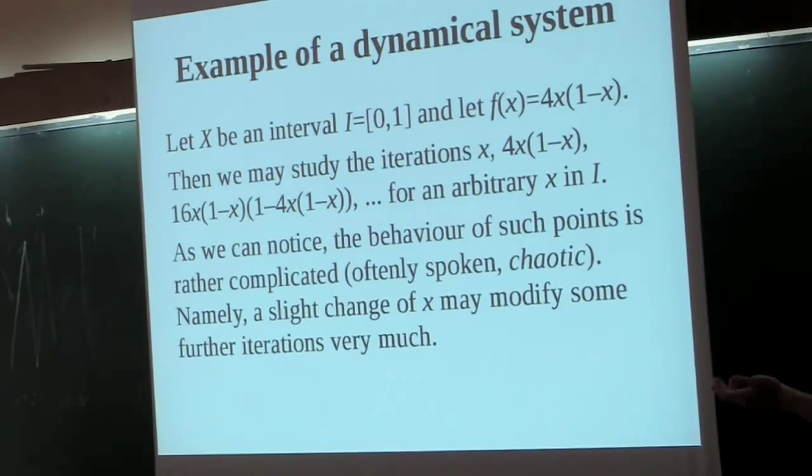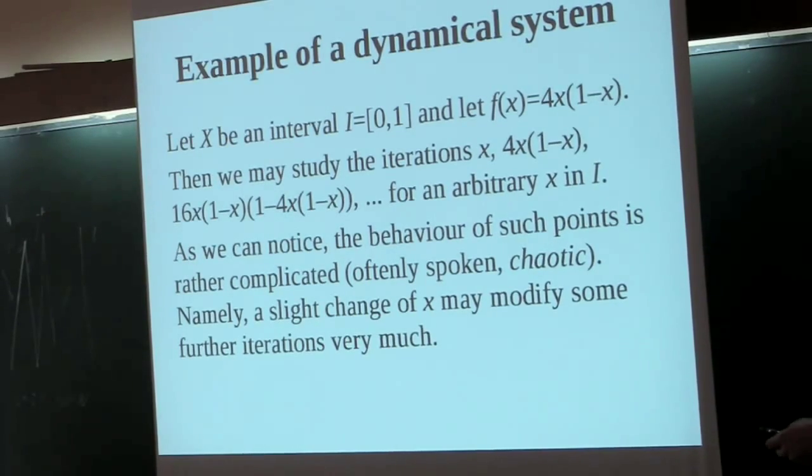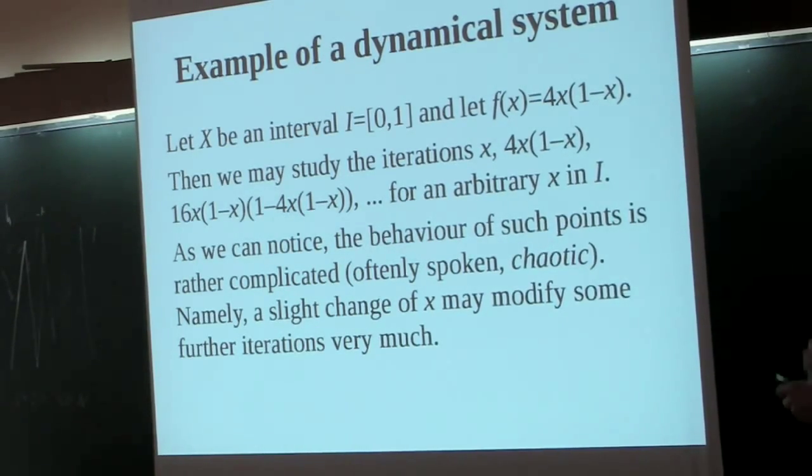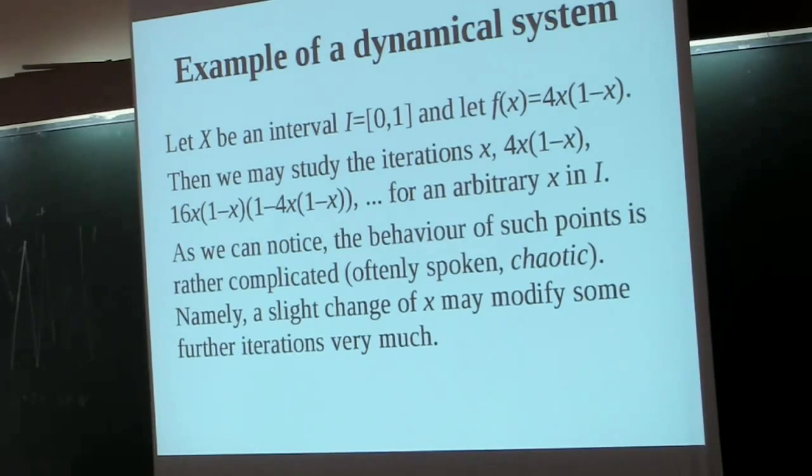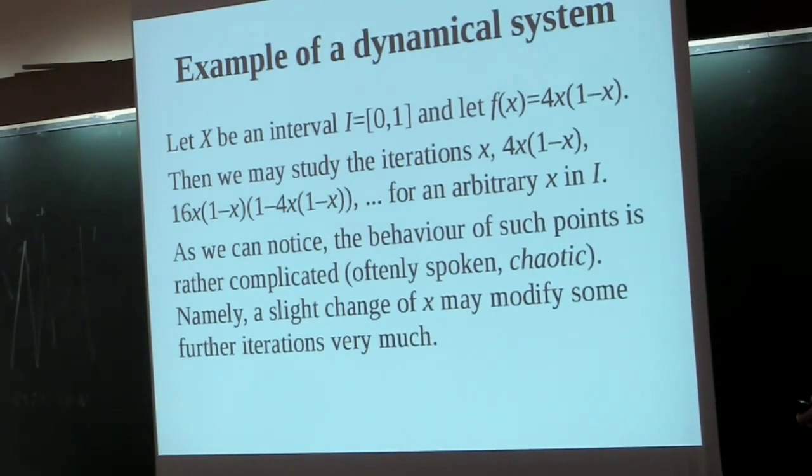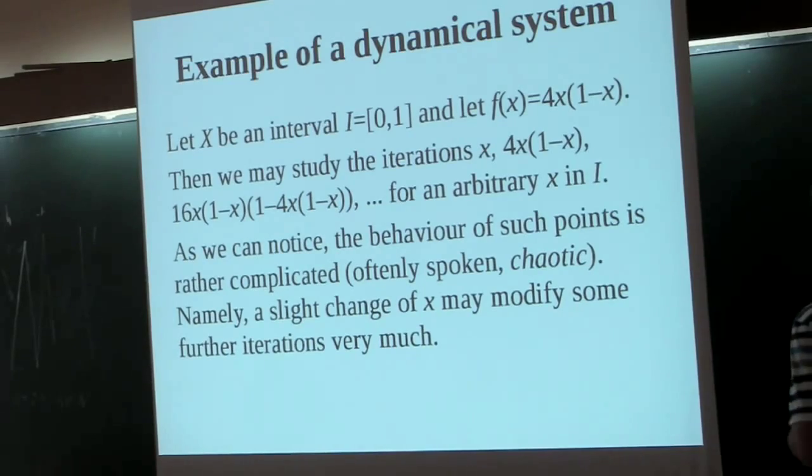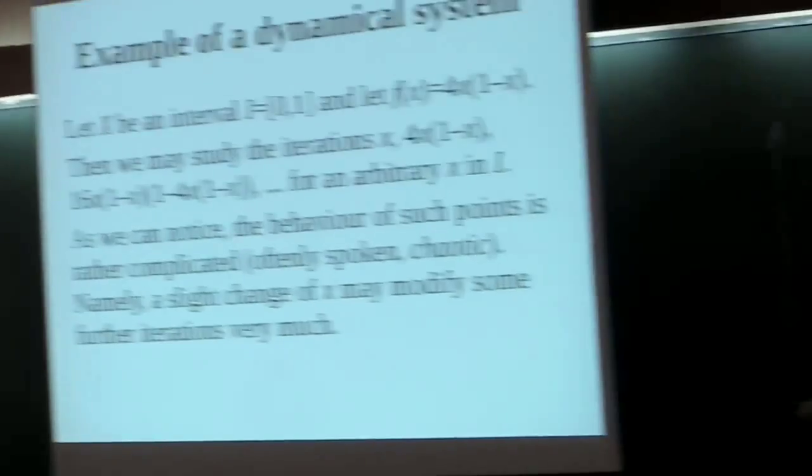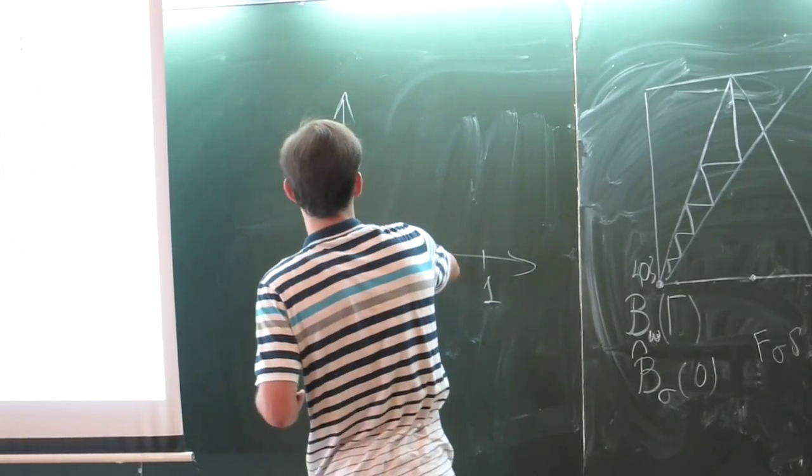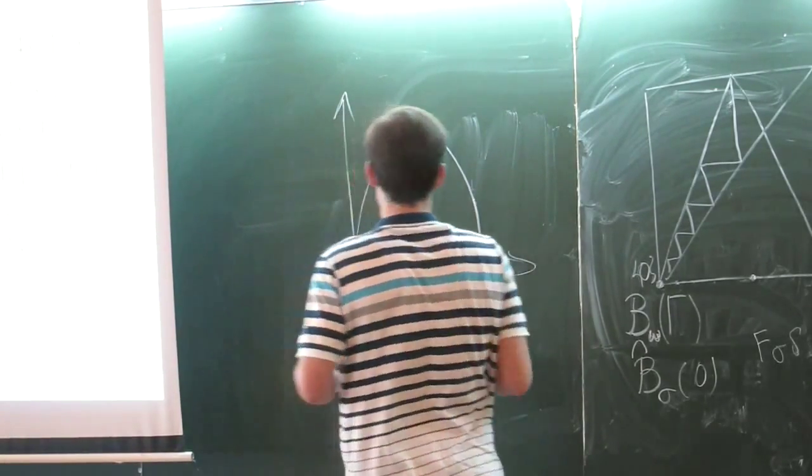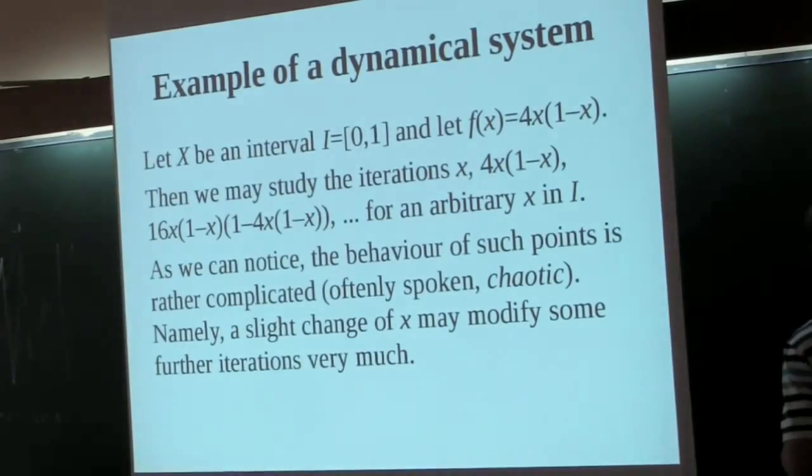Now, let me introduce an example. This is a well-known example which is studied partly. We take an interval from 0 to 1 and apply a mapping which is a parabola. If we are interested in the exact formula, it is the following.